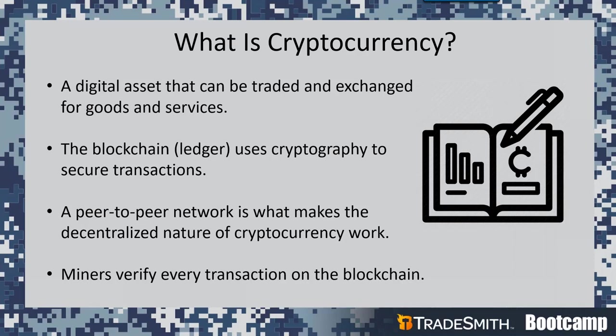The blockchain is a secured ledger and it uses cryptography to secure the transaction, making it nearly impossible to counterfeit or double spend. Cryptocurrencies are called cryptocurrencies because they are secured by cryptography. The blockchain is a decentralized open-source ledger that anyone can access. This means that while every transaction of a cryptocurrency is recorded on the same open-source ledger, there are many, many copies of that ledger. Anyone who is part of the network has a copy. This peer-to-peer network is what makes the decentralized nature of cryptocurrency work.